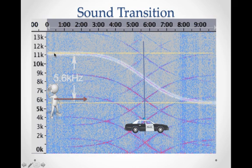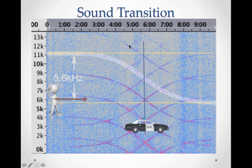If instead of a car horn it was the higher-pitched ding, ding, ding sounds that you heard — like from a train track — it might be a higher frequency to start with and it would follow the upper curve as you went by the source.